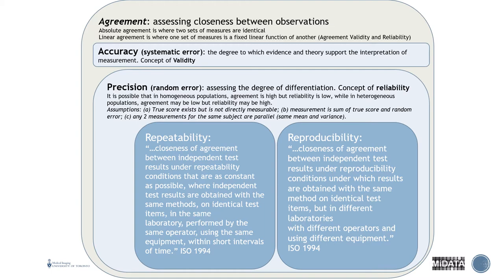Under precision come two types: repeatability and reproducibility. These definitions come from ISO standards from 1994, often used by the FDA and other medical bodies. Repeatability is the closeness of agreement between independent test results obtained with the same methods on identical test items, in the same laboratory, by the same operator, using the same equipment, within short intervals of time — your test-retest.